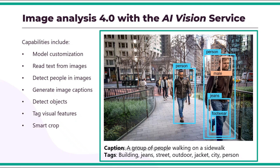As you can see here, we have an image taken from the Microsoft Learn website and it is showing that we have different objects like jeans and footwear detected. We also have a person detected and we can also identify the gender of that person, whether male or female. The Azure AI Vision Image Analysis Service can extract a wide variety of visual features from your images, as is visible here.